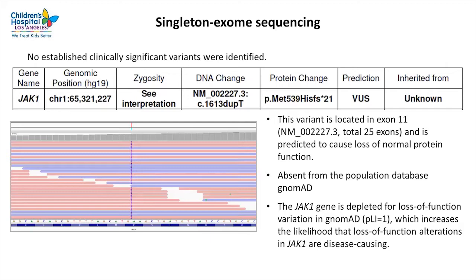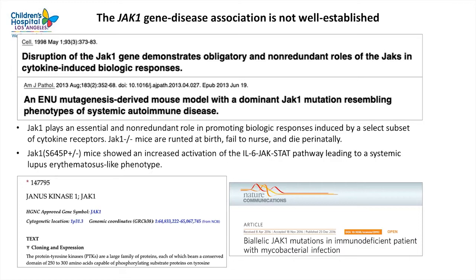Here is the IGV screenshot for this JAK1 variant — all reads showed the same variant, which is a duplication of a single base pair located in exon 11. There are a total of 25 exons in this gene. This variant is predicted to cause loss of normal protein function, and it is absent from the population dataset gnomAD. The JAK1 gene is also depleted for loss-of-function variation in gnomAD, and the pLI score for this gene is 1, increasing the likelihood that loss-of-function alterations in JAK1 are disease-causing.